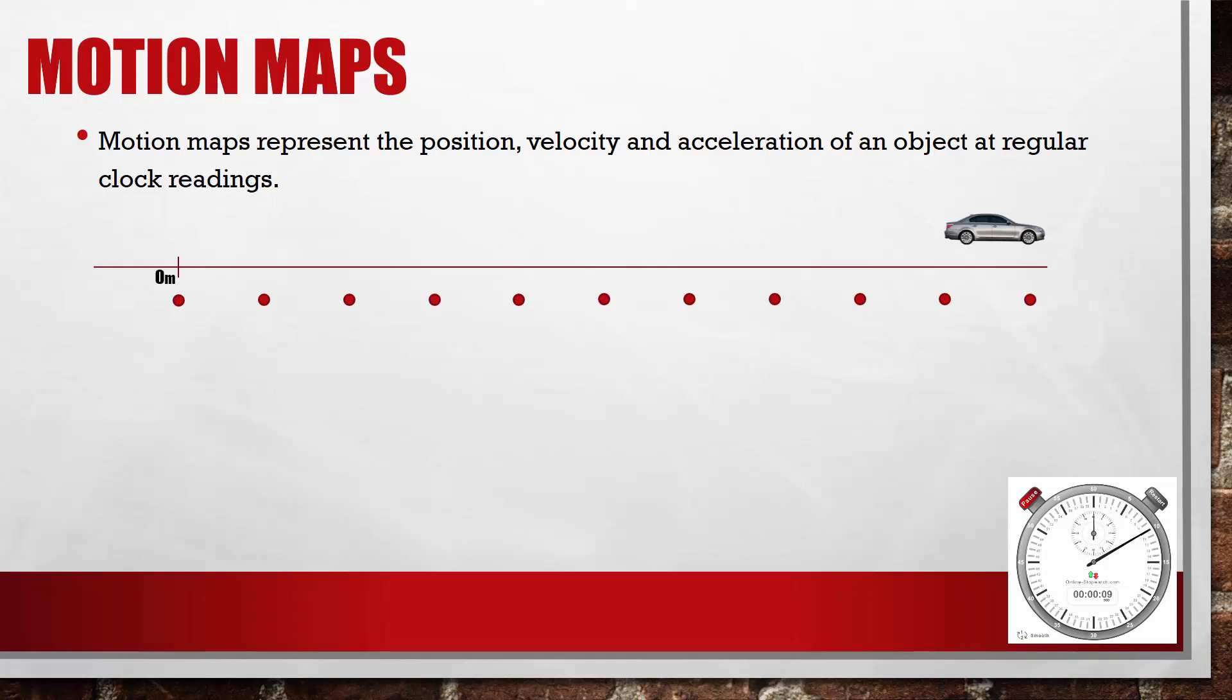To represent the velocity of the car, we are going to attach an arrow to each of those positions. As a convention, we'll make the length of these arrows equal to half of the space between the dots that represent the positions.